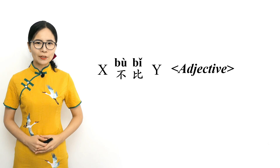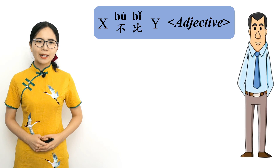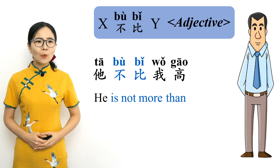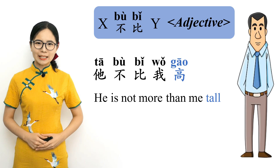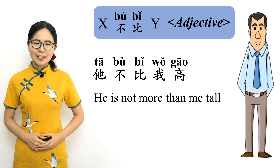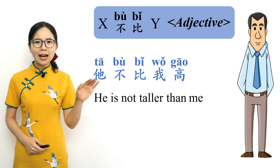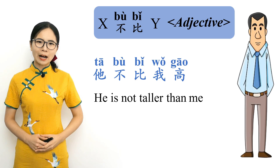To say 'he is not taller than me,' we say 他不比我高. 他 means 'he,' 不比 means 'is not more than,' 我 means 'me,' and 高 is an adjective meaning 'tall.' Literally, 'he is not more than me tall' — in other words, he is not taller than me. Please repeat after me. 他不比我高. He is not taller than me.